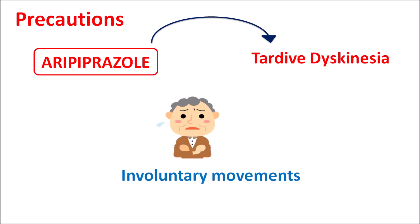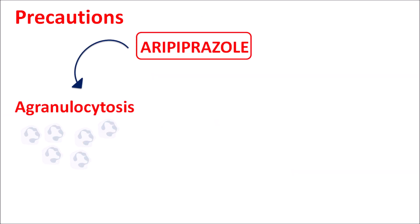Similarly, this drug can produce tardive dyskinesia. Dyskinesia is a disturbance in kinetic movements, and tardive means slowly developing. Aripiprazole can produce slowly developing disturbance in kinetic movements that are somewhat irreversible, resulting in involuntary movements. Tardive dyskinesia is observed with chronic use of this drug, and dysphagia — difficulty in swallowing — can also be observed. Similarly, this drug can produce agranulocytosis resulting in neutropenia as well as leukopenia, which increases the risk of infections.